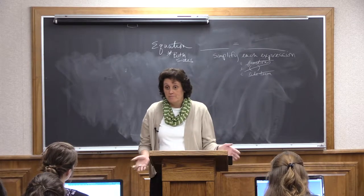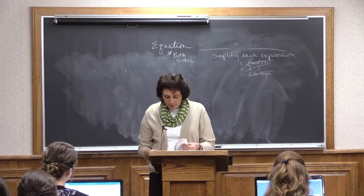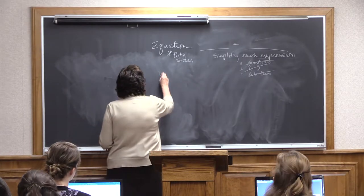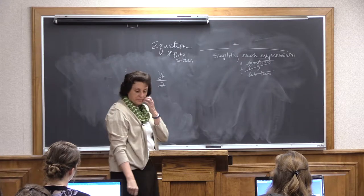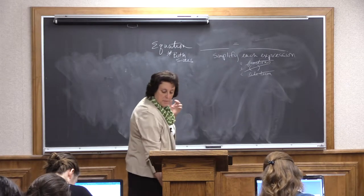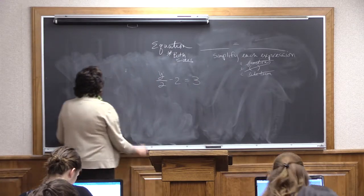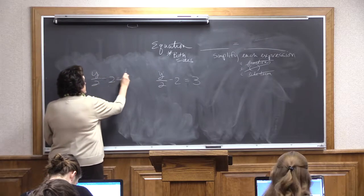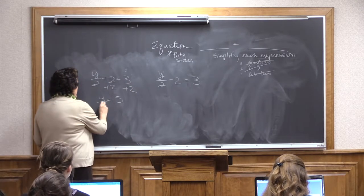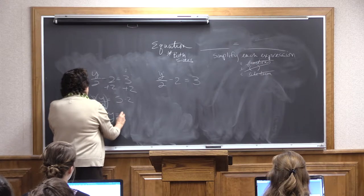Even though algebra is done in fraction format, we do not have to deal with fractions in our equations. We can always multiply through by the least common denominator because this is an equation — we can manipulate it however we want as long as we obey the equality idea of both sides. For example, with y over 2 minus 2 equals 3: I can add 2 to both sides, then multiply both sides by 2 to eliminate the denominator, giving y equals 10. Or I can multiply by 2 first through both sides, getting y minus 4 equals 6, and then inverse the 4 to get y equals 10.